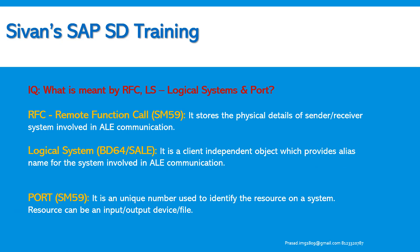What is meant by RFC, logical systems, and port? RFC — Remote Function Call — is created using transaction code SM59. It stores the physical details of the sender or receiver system involved in ALE communication. Logical system is defined using transaction codes BD64 or SALE. It is a client-independent object that provides an alias name for the system involved in ALE communication. Port is also created using transaction code SM59 and is a unique number used to identify a resource — such as an input/output device or file — on a system.